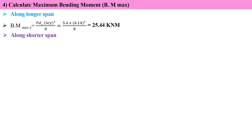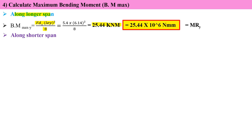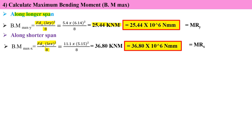Calculate the maximum bending moment using M = fd × LE² / 8. Along the longer span, using the factored load and effective length for the longer span: M = 25.44 kN·m. Along the shorter span: M = 36.8 kN·m. These are converted to N·mm (× 10⁶) for further calculations.